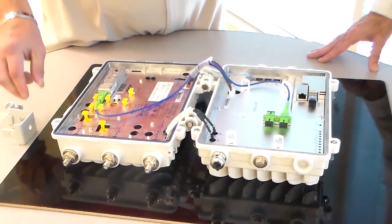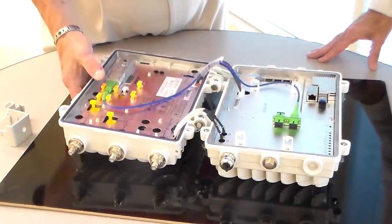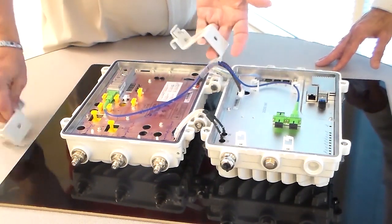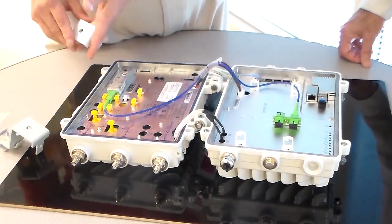The box itself is designed to be mounted either on a wall unit with these two, or we can actually do a pole mount or a wire mount out in the field using these two brackets right here, and they're just interchangeable.